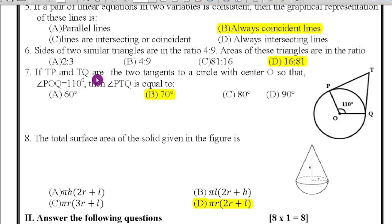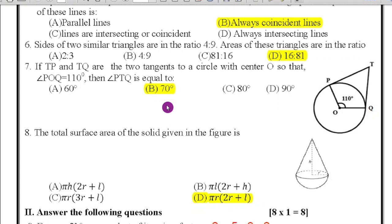Seventh question: if TP and TQ are the two tangents of a circle with center O so that angle POQ equals 110 degrees, then angle PTQ equals dash. Here you see the figure where the tangents will form, they always form a 90 degree. Therefore they are asking to find PTQ. Therefore it is one of the quadrilaterals. Therefore sum of the quadrilateral equals 360. Therefore P + T + Q + O equals 90 degrees plus 90 degrees plus 110 degrees. So 360 minus 290, then we will get the answer 70 degrees. Therefore option B is the right answer.